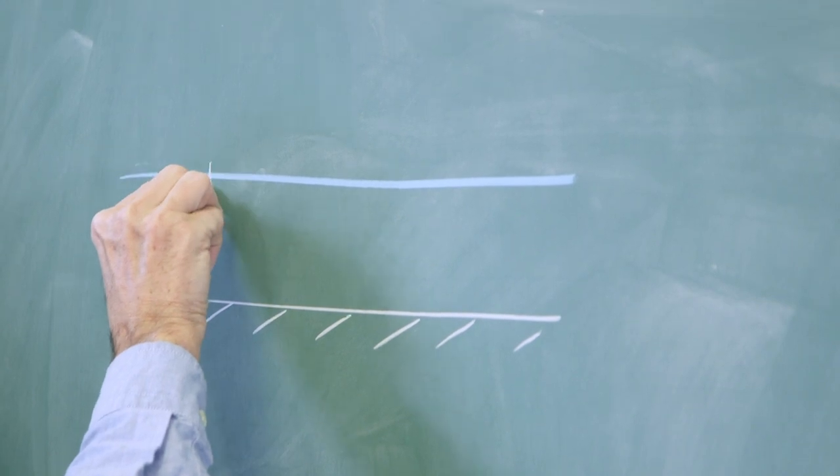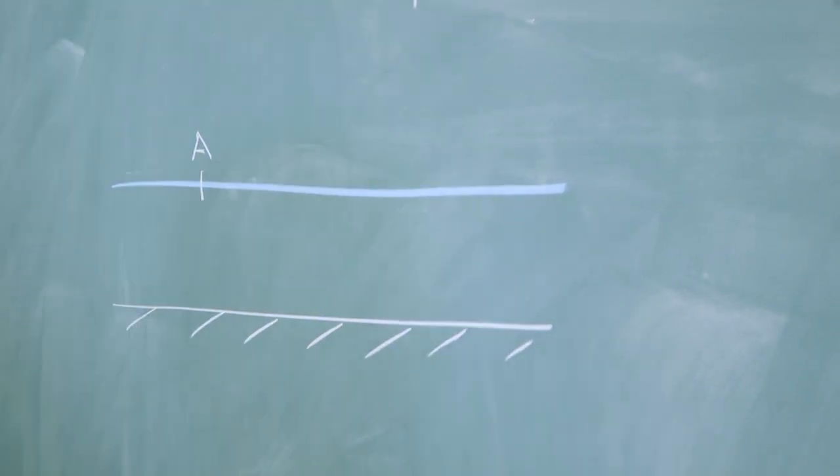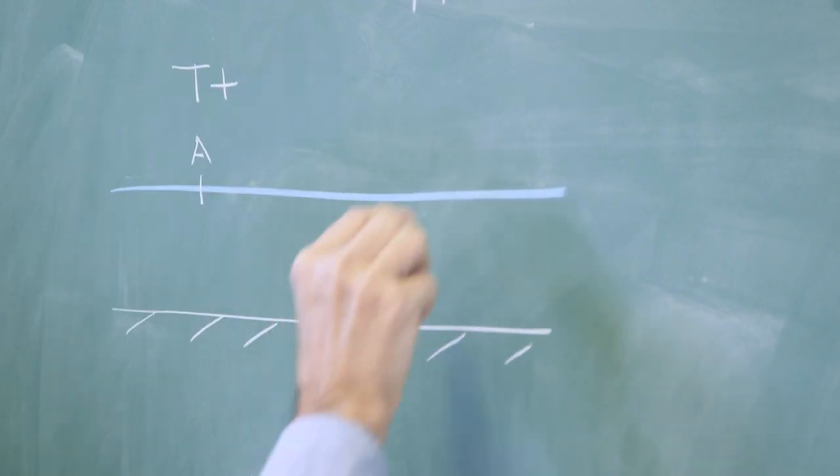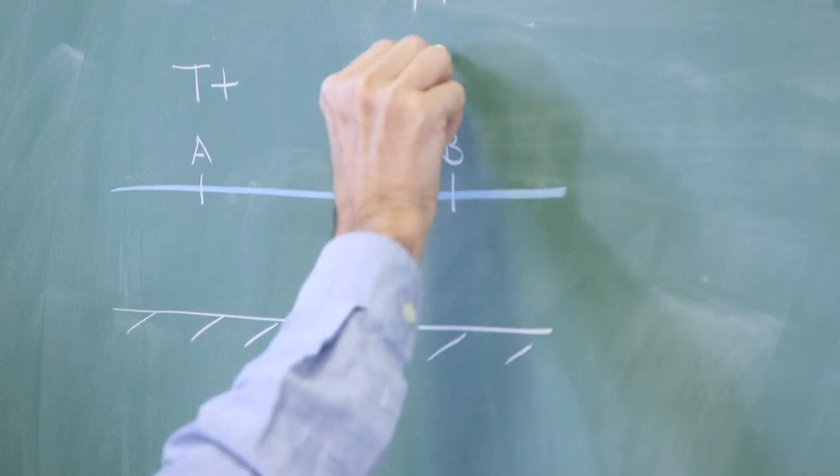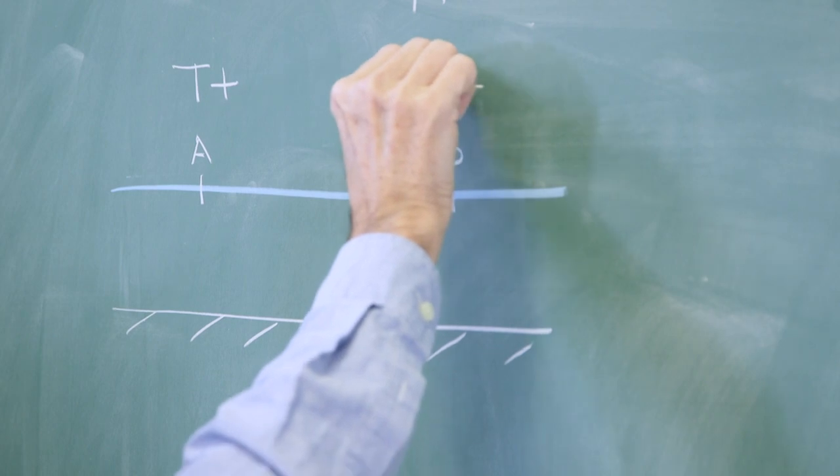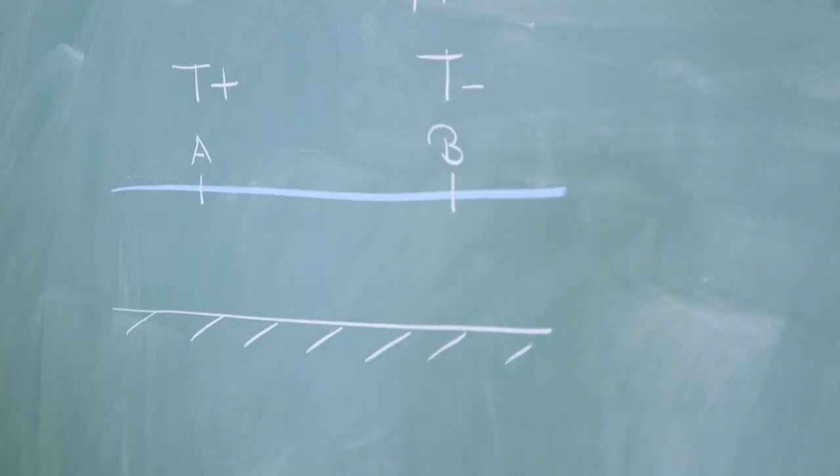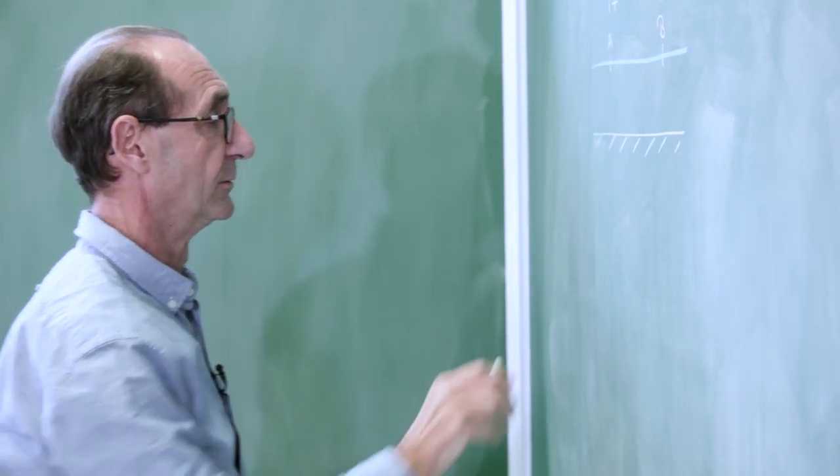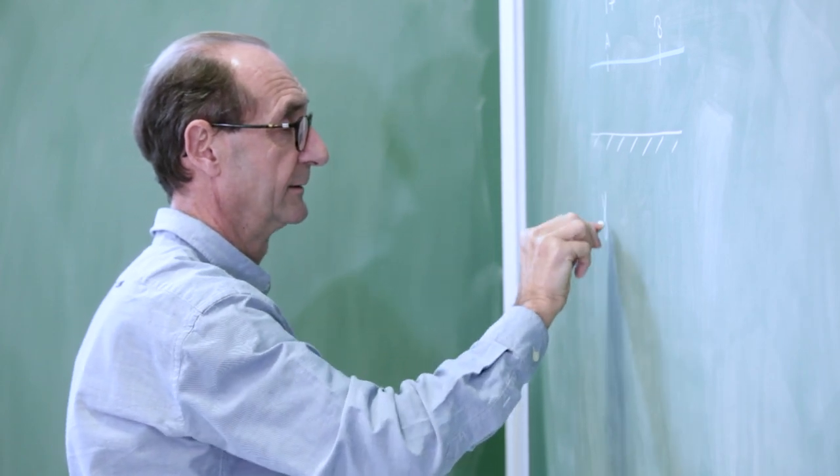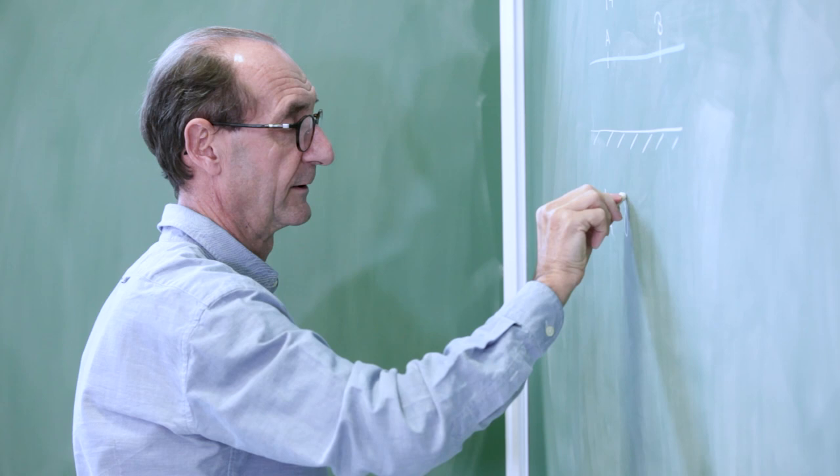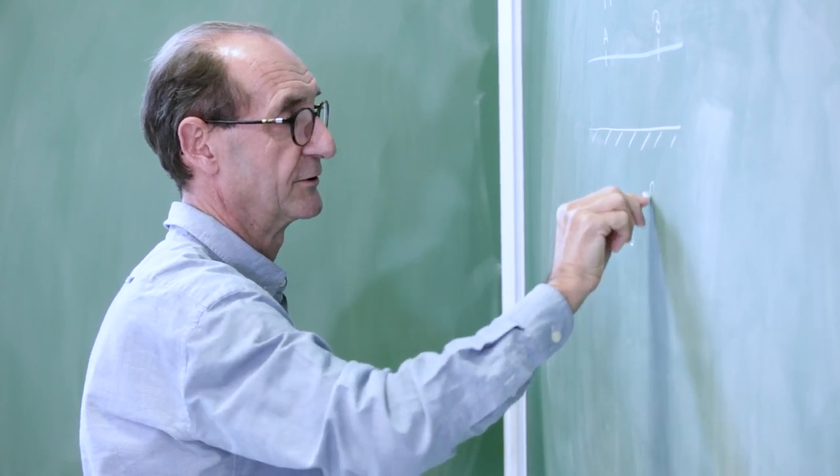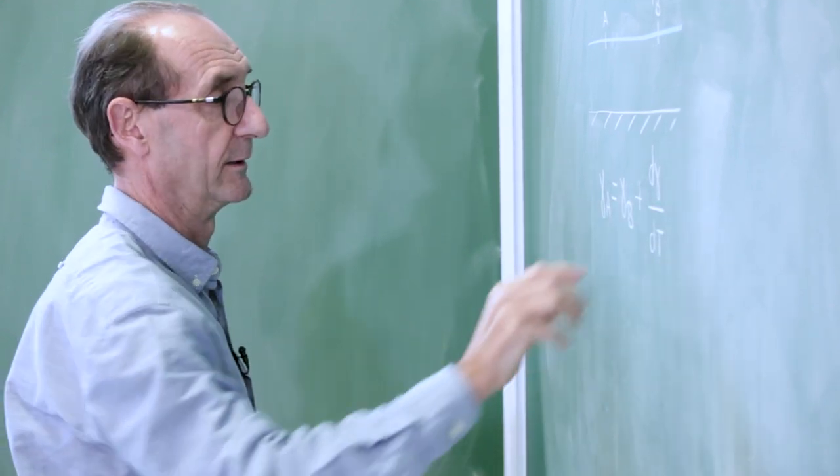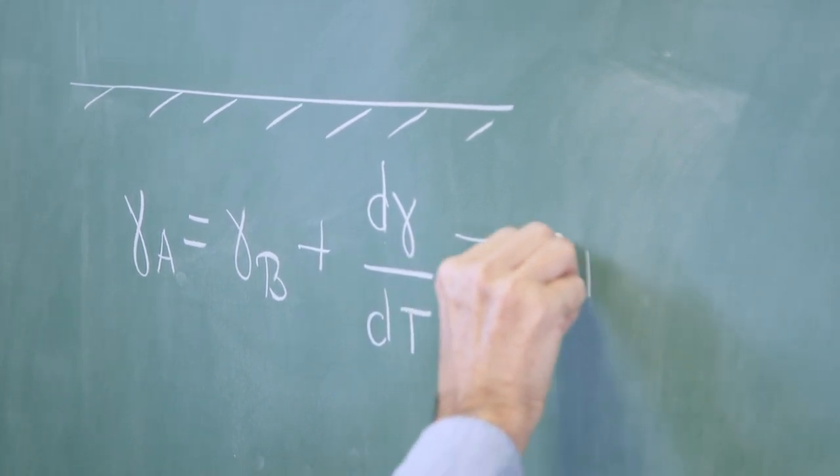We have here at point A our soldering iron, which will increase the temperature to a value which I will call T+. And here at point B, the liquid is cooler at a temperature that I will call T-. Now, I would like to compute the difference in surface tension between A and B. So, the tension γ_A is equal to γ_B plus the variation of surface tension with temperature, dγ/dT, multiplied by T+ minus T-.